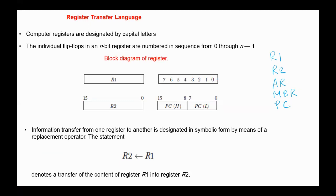This is the numbering in a byte register, or we can number directly from 0 to 15. This is flip-flop 0, flip-flop 1, flip-flop 15. We can also partition the register — for example, the program counter is partitioned into a low part and a high part.